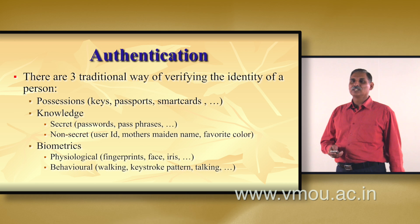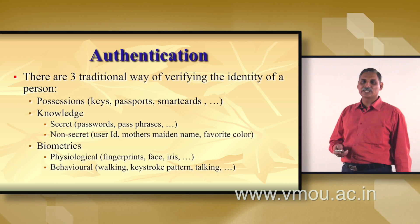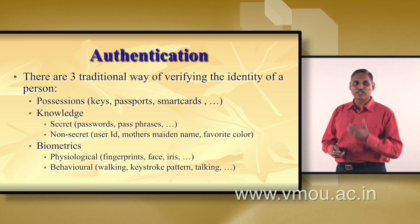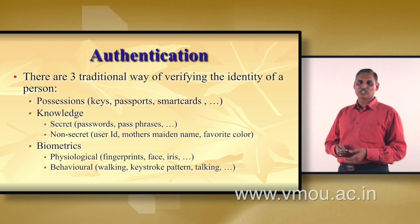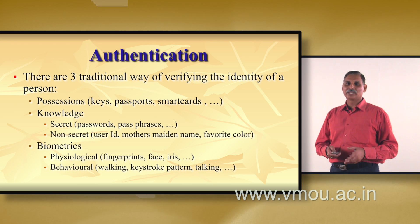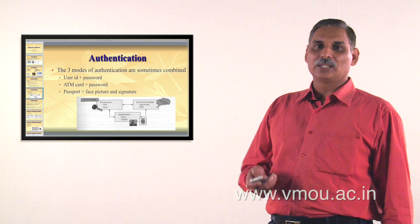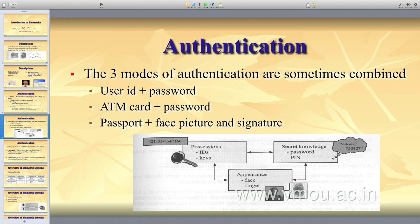In biometrics, there are two parts: physiological — fingerprint, face, iris — and behavioral — the way of walking, the way of talking, keystroke pattern, and the way we type on the keyboard, etc.